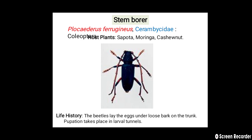The next pest of Sapota is stem borer, that is Plocidaeus ferrugineus. It belongs to the family Cerambycidae, order Coleoptera. Host plants are Sapota, moringa, and cashew. Here you can see the adult of the stem borer. In the life history, the beetles lay eggs under the loose bark on the trunk and pupation takes place inside the larval tunnels.